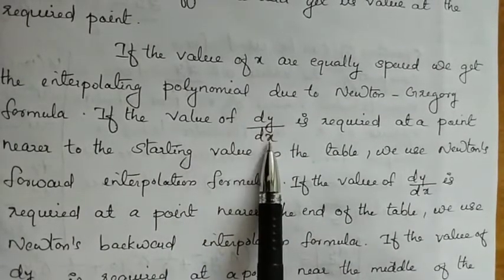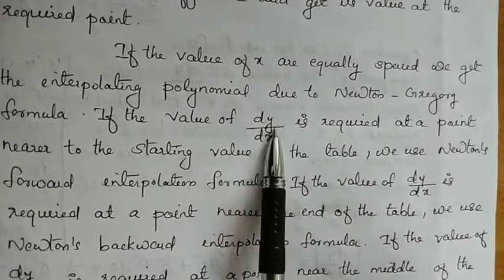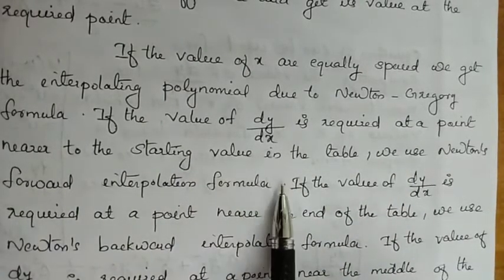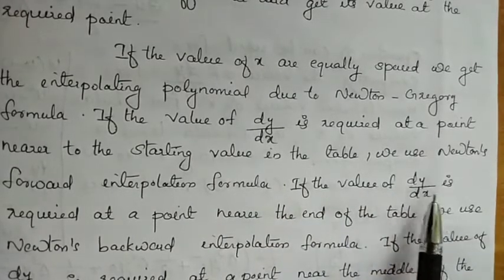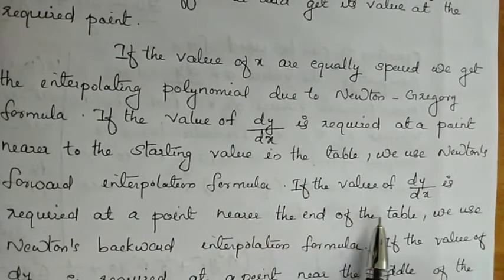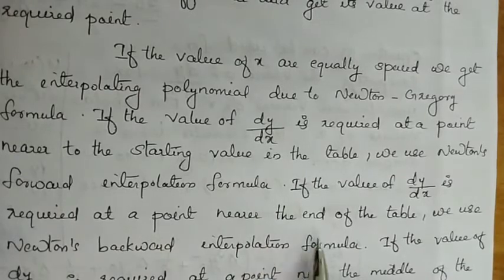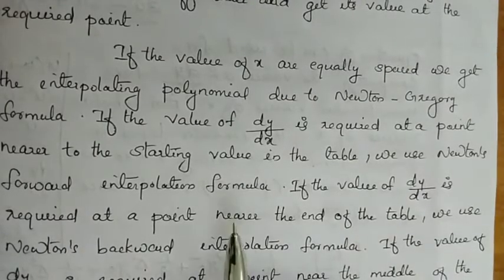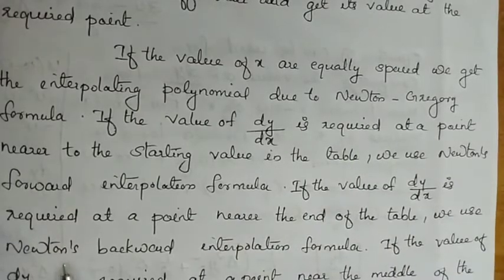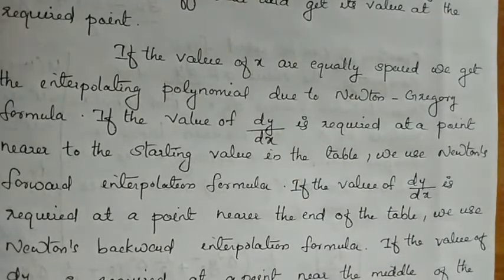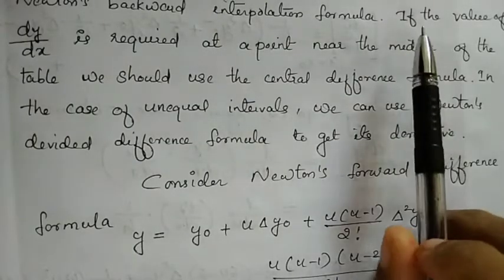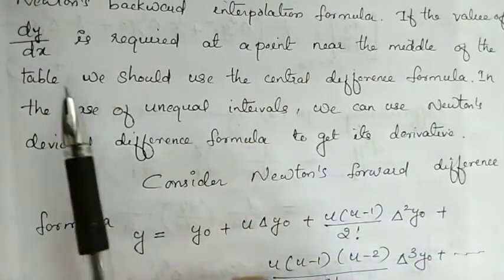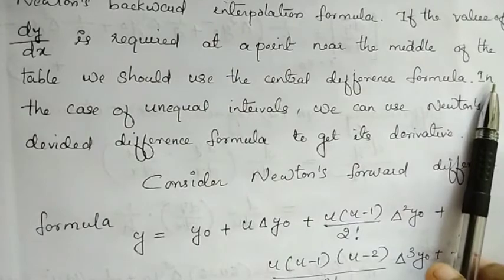If the value of dy/dx is required at a point nearer to the end of the table, we use Newton's backward interpolation formula. If the value of dy/dx is required at a point near the middle of the table, we should use the central difference formula. This formula has already been studied.